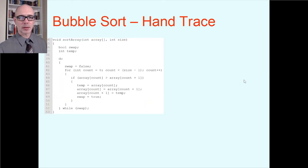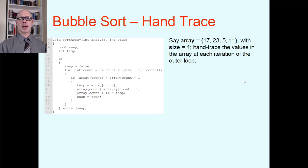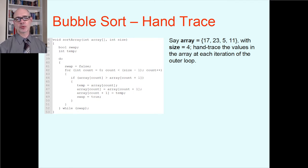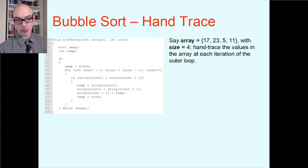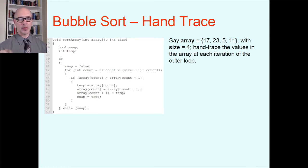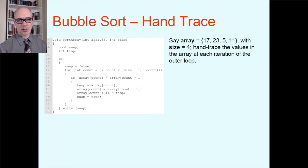Let's hand trace that to make sure we understand what's happening. Let's say I have an array starting as 17, 23, 5, 11 — obviously size 4. We're going to trace the values in the array at each iteration of the outer do-while loop, writing down the condition of the array just as each iteration of the do-while loop finishes.